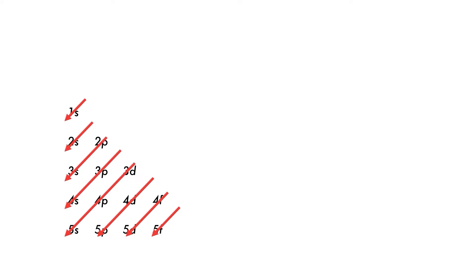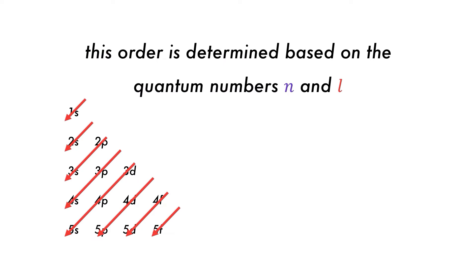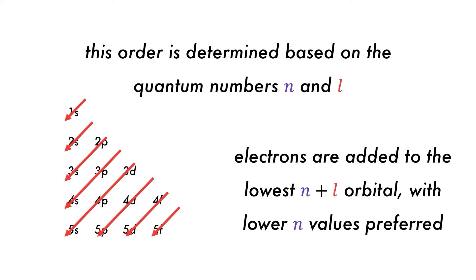While the Aufbau Principle is based on the energies, there is some basis in quantum numbers as the order is based on the sum of the n and l quantum numbers. When orbitals have the same sum of n and l, the orbital with the lower n value is filled first. For more on quantum numbers, check out the video in the description.